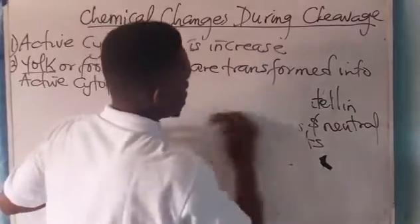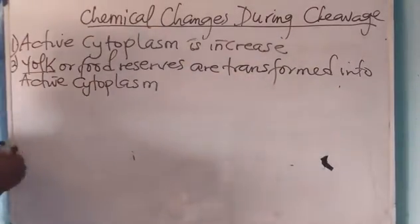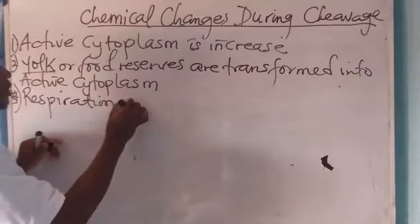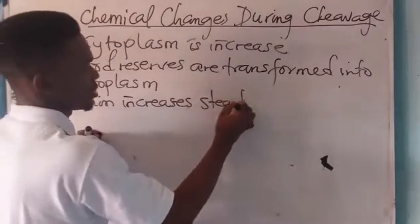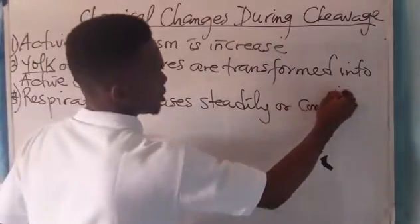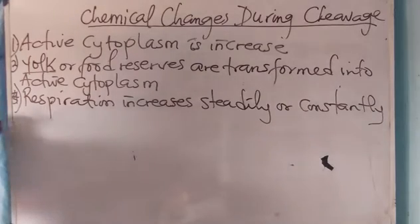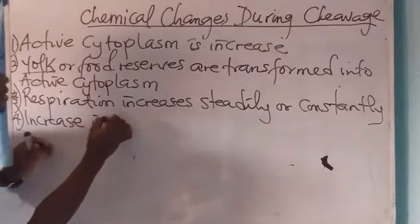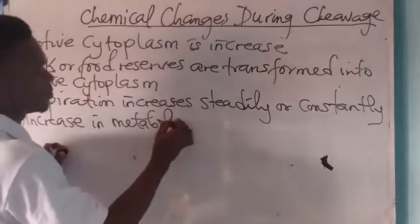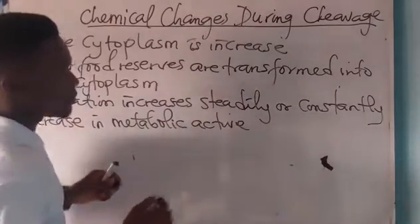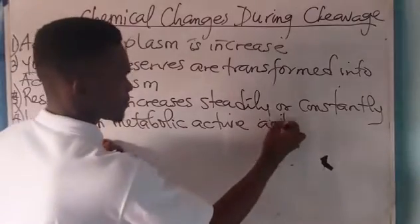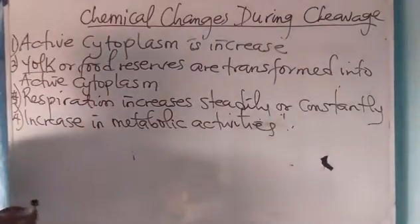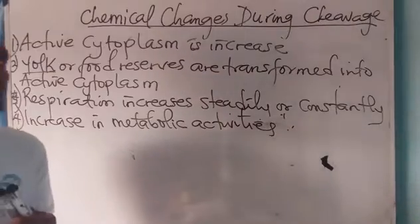Number three: the rate of respiration increases steadily or constantly. Number four: there is an increase in metabolic activities. Metabolism means the sum total of chemical reactions that take place inside a living cell.